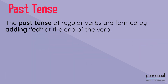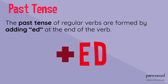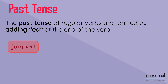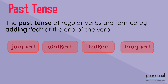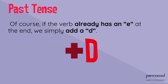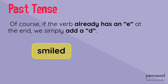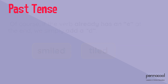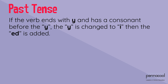The past tense of regular verbs is formed by adding 'ed' at the end of the verb, like jumped, walked, talked, and laughed. Of course, if the verb already has an 'e' at the end, we simply add a 'd' — for example, smiled and tiled. If the verb ends with 'y' and has a consonant before the y, the y is changed to 'i' and then 'ed' is added — for example, carry to carried.